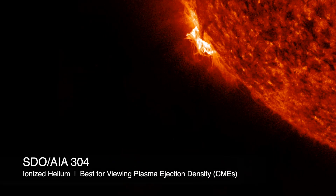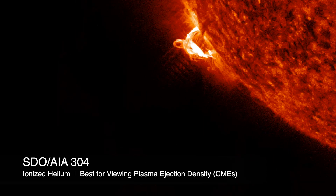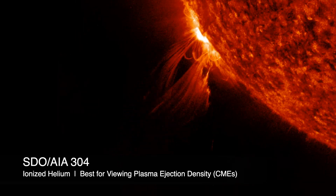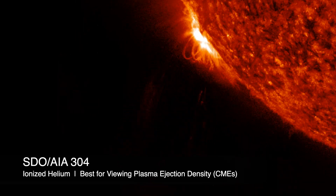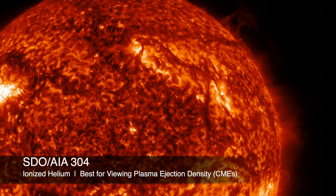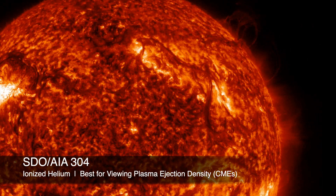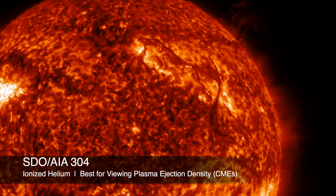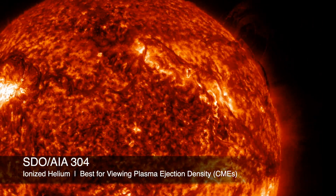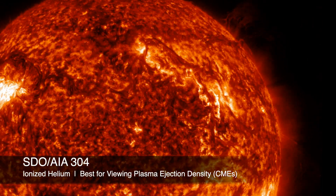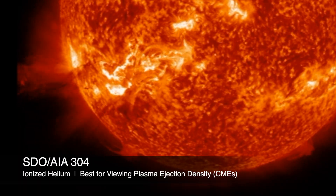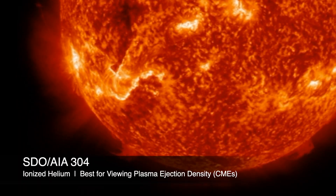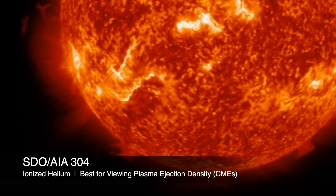Many people like the red 304 angstrom view the best. This is ionized helium — sure is beautiful — and you can see plasma filaments as the dark, snake-like ropes of plasma, and especially their eruptive action as they leave the sun. It's probably the best way to view plasma ejection density of those CMEs.